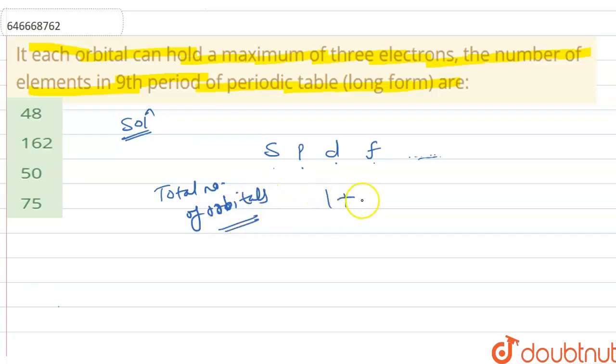are equal to 1 + 3 + 5 + 7 + 9, that is equal to 25. So total number of orbitals are 25.